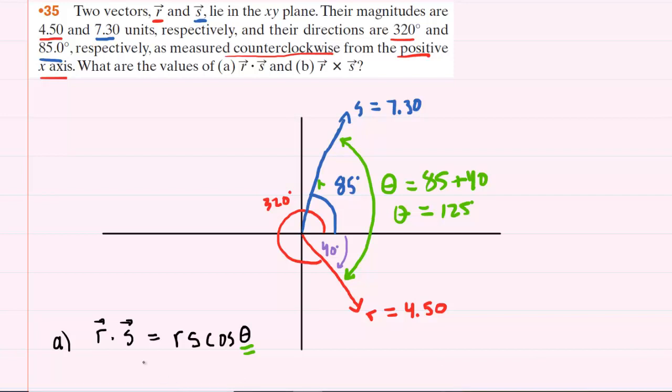That's what we're going to plug in. So we take the magnitude of r, which is 4.5, multiplied by the magnitude of s, 7.3, and then multiplied by the cosine of 125 degrees. Make sure your calculator is set to degree mode. When you calculate this, you should get about negative 18.8, and that would be the correct answer to part a.